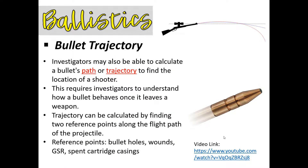Trajectory is also used in ballistics — this is the physics of firearms, bullets, and projectiles. Investigators are able to calculate a bullet's path or trajectory. If you've watched any documentary on the JFK assassination, they have used trajectory for years to try to figure out exactly where the shooter was positioned. There are many factors that must be accounted for, but investigators are highly trained and specialized in this, and trajectory can be very helpful.